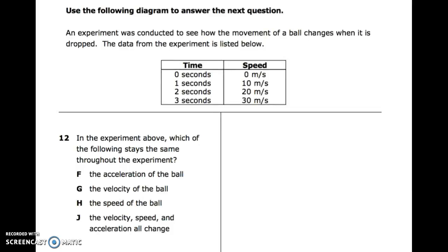Number twelve: in the experiment above, which of the following stays the same throughout the experiment? F: the acceleration of the ball. G: the velocity of the ball. H: the speed of the ball. J: the velocity, speed, and acceleration all change. Let's look at the diagram. Use the following diagram to answer the next question. An experiment was conducted to see how the movement of a ball changes when it's dropped. The data from the experiment is listed below — you have time and speed.